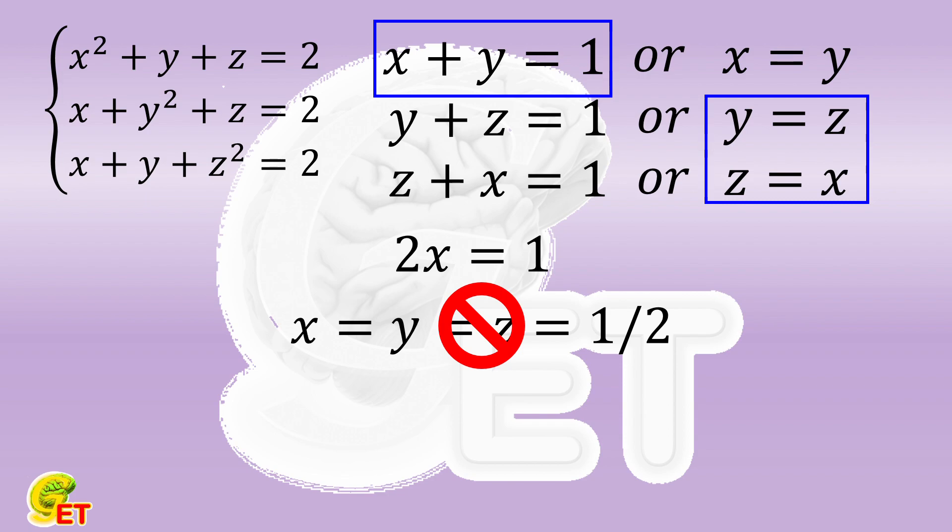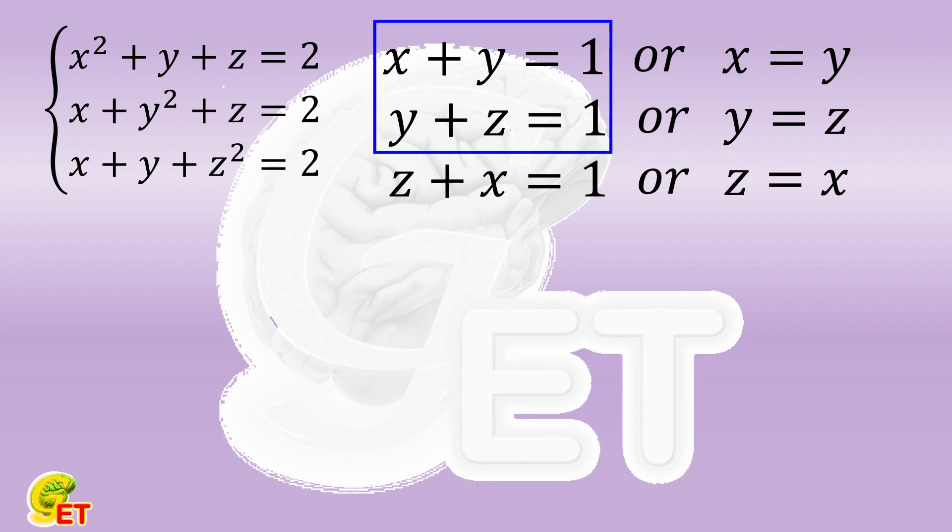Next, we select two conditions on the left and one condition on the right. The condition z equals x on the right means that the two conditions on the left become the same one. That is, y plus z equals 1. Bringing it into the first equation, we get the square of x equals 1.